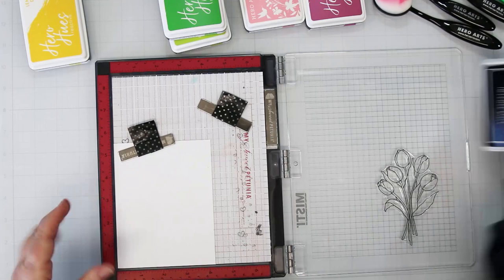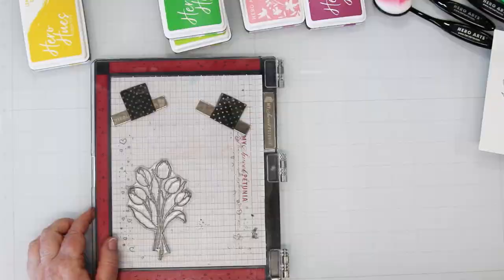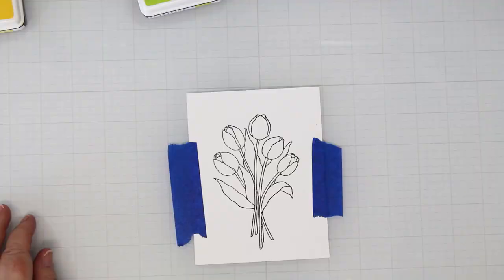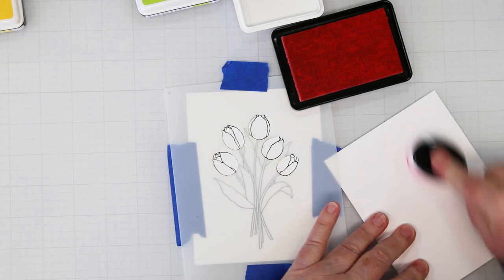I'm using the intense black ink to stamp the outline stamp from the tulip bouquet stamp set, giving it a good rub so I have nice coverage. I actually take this out and away from my sticky mat. In the next card I actually did use the sticky mat and just left it on there, and it is a great tool because it will also hold down the stencil for you while you're working on it.